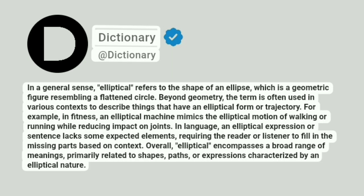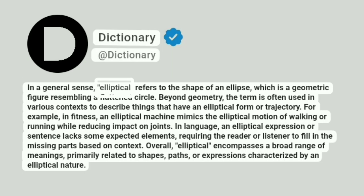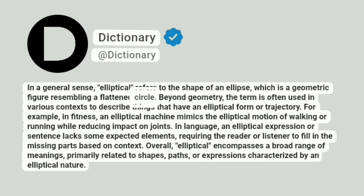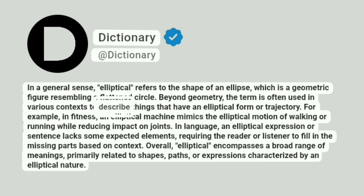Dictionary. Addictionary. In a general sense, elliptical refers to the shape of an ellipse, which is a geometric figure resembling a flattened circle. Beyond geometry, the term is often used in various contexts to describe things that have an elliptical form or trajectory.